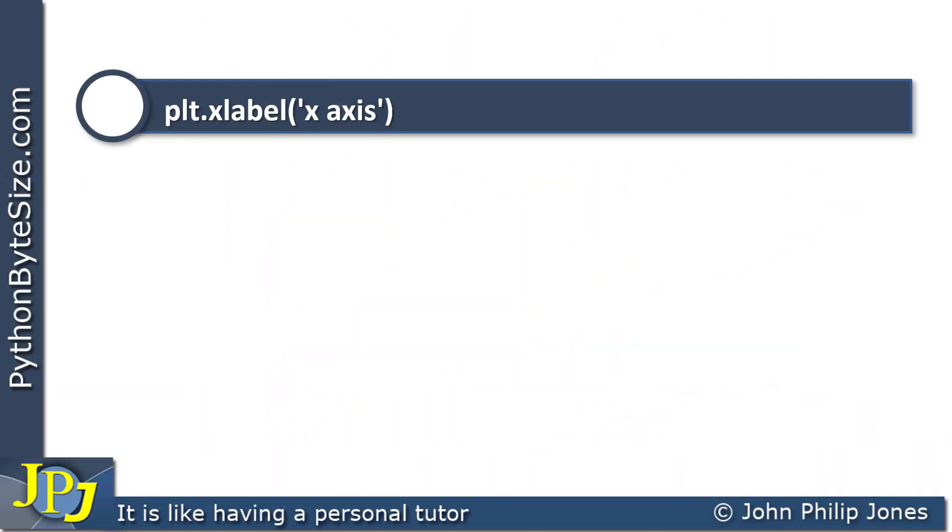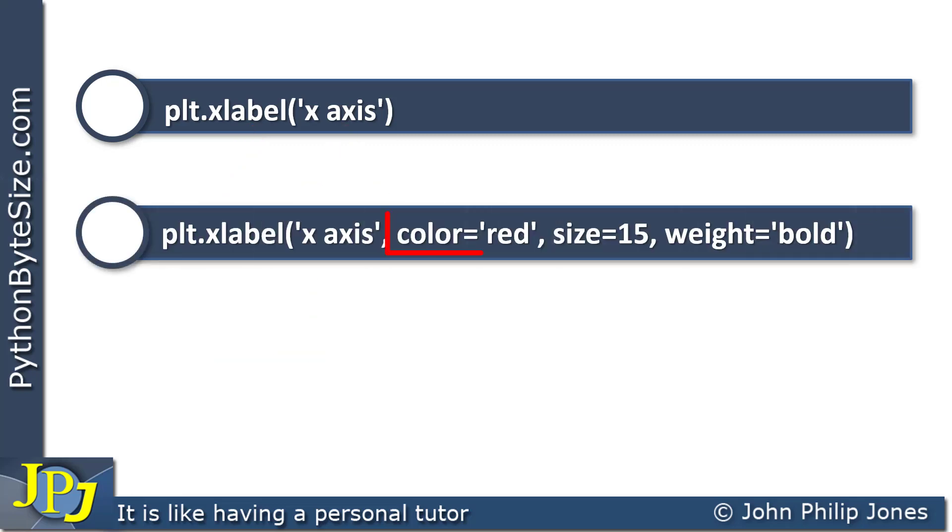So let's consider this here. You can see I'm invoking this, that's associated with plt, and I'm passing in the string x-axis. What I can also do, I can arrange to invoke this, but instead of just having this string, what I can have are other arguments that I can pass in.